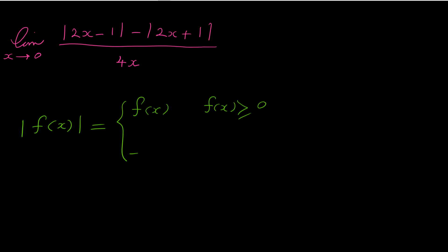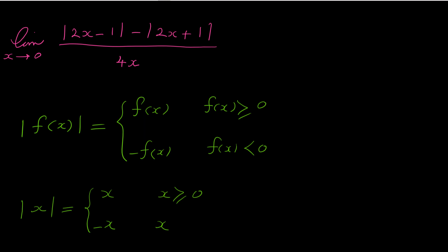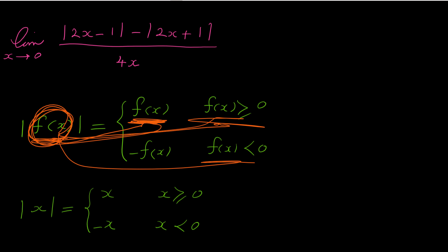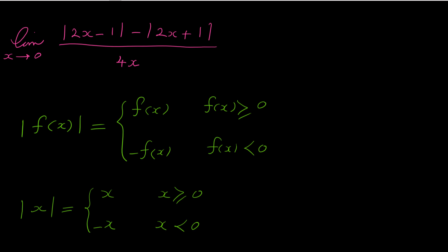And the absolute of f(x) is negative of f(x) when f(x) is less than zero. For example, absolute of x equals x when x is positive, and absolute of x equals negative x when x is negative. So absolute of any expression f(x) is equal to itself when f is positive, but if f is a negative expression, the absolute of that negative expression is the negative of that expression.